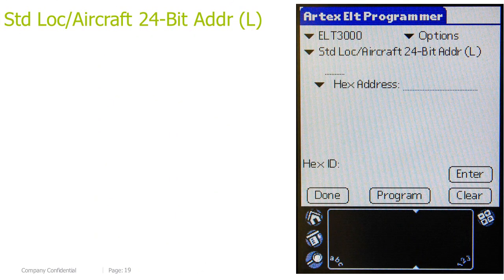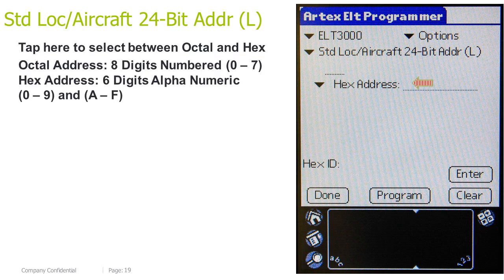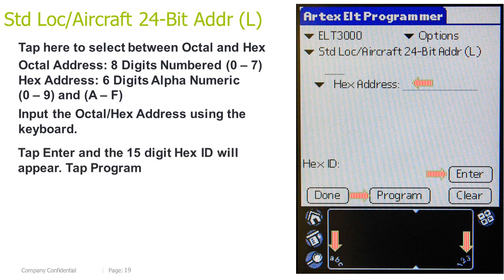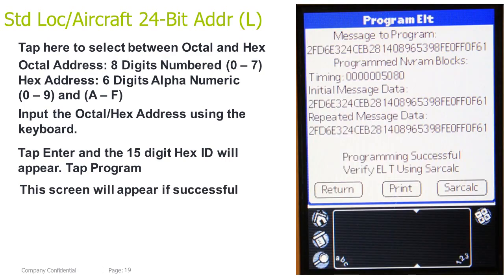Aircraft 24-bit address long. Tap here to select between octal and hex. Octal address is 8 digits, numbers 0 through 7; hex address is 6 digits, alphanumeric, 0 through 9 and A through F. Input the octal/hex address using the keyboard. Tap Enter and the 15-digit hex ID will appear. Tap Program. This screen will appear if successful.